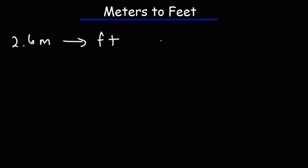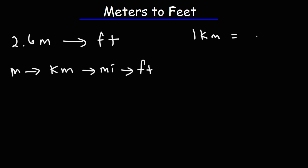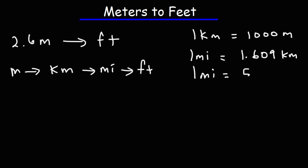In order to convert meters to feet, we need to convert meters to kilometers, then kilometers to miles, and then miles to feet. One kilometer — kilo means a thousand — so one kilometer is a thousand meters. One mile is equal to 1.609 kilometers, and one mile is also equal to 5,280 feet. Those are the three common conversion factors we'll use to go from meters to feet.